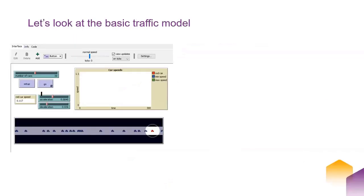Just to talk about today's experiment section: I wanted to find a basic model with very few parameters to show you how experiments go with parameters. The tram commute model and other models we've looked at are very interesting, but they have so many parameters it can be hard to get your head around what experiments look like. So I picked a model from the models library — it's super easy, only three parameters: number of cars, acceleration rate, deceleration rate.